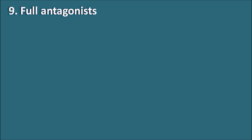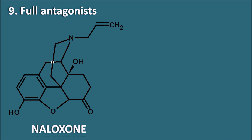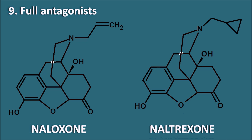Full antagonists include naloxone and naltrexone. Naloxone has an allyl group (3 carbons) at the 17th position plus a 14-hydroxy group, 7,8-saturation, and 6-keto group — these combined structural features make it a full antagonist. Naltrexone has a cyclopropylmethyl group (4 carbons) at the 17th position with the same 14-hydroxy, 7,8-dihydro, and 6-keto substitutions. Naloxone is a short-acting full antagonist, whereas naltrexone is a long-acting full antagonist.